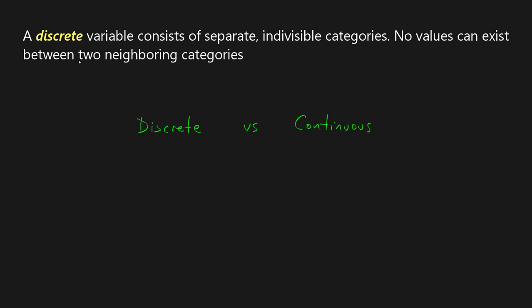Now, the textbook definition of discrete data, or discrete variable, is very straightforward. It says a discrete variable consists of separate, indivisible categories, and no values can exist between two neighboring categories.